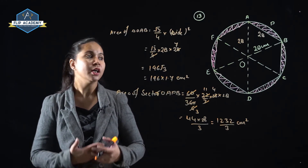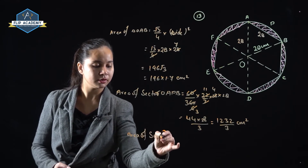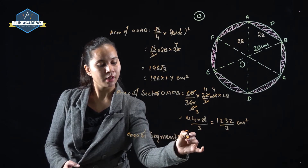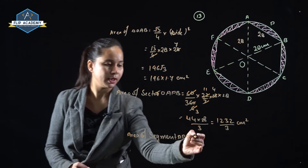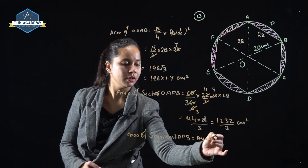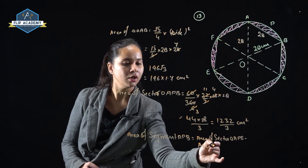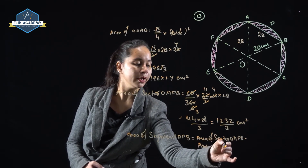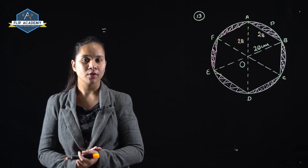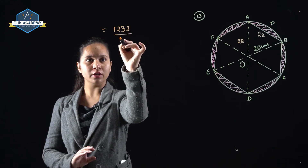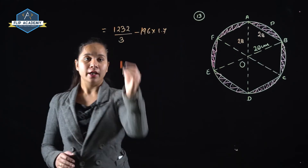Now we need to find the area of segment APB. Area of segment APB = Area of sector OAPB − Area of triangle OAB = 1232/3 − 196 × 1.7. Taking LCM as 3: = (1232 − 196 × 1.7 × 3) / 3.